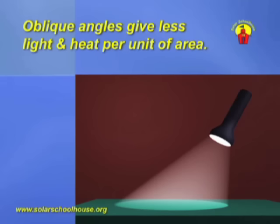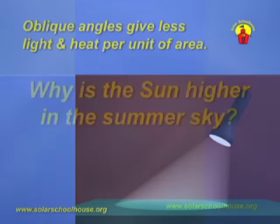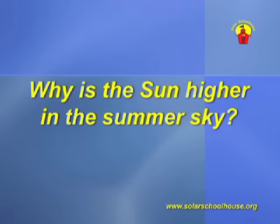The same thing happens with the sun. The higher it is in the sky, the more direct and intense the sunlight will be. So why is the sun higher in the summer? To find out, we need to remember two things: first, the Earth is tilted on its axis, and second, the Earth is orbiting the sun.